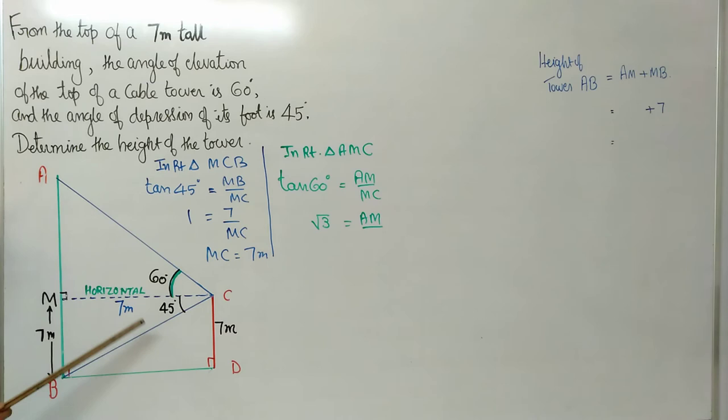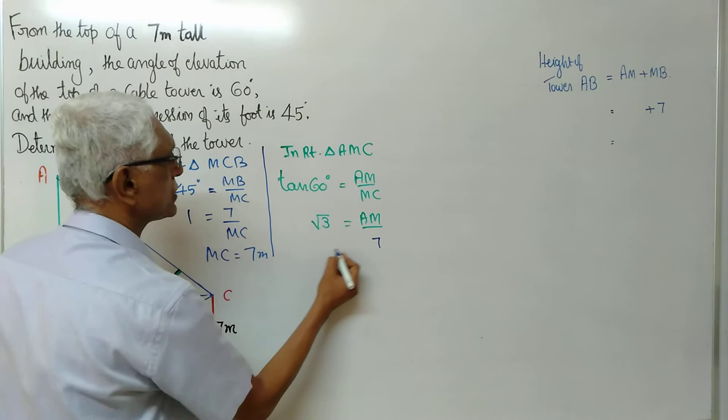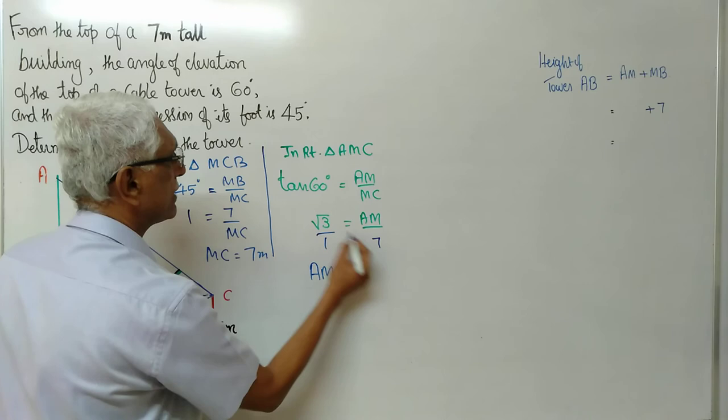It was this MC which was stopping us. Now we come back and substitute here. Cross multiply. 1 into AM is AM. 7 into root 3 is 7 root 3 meter.